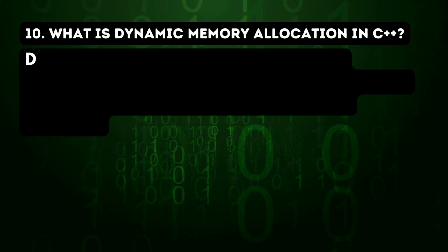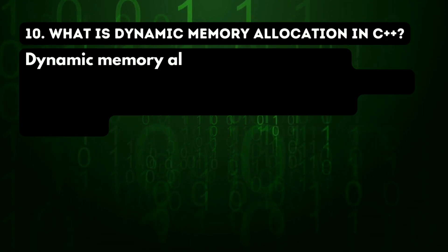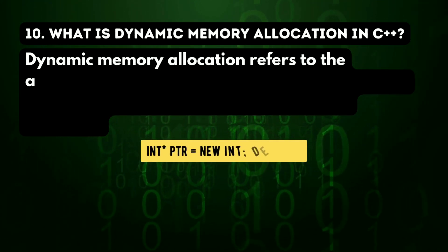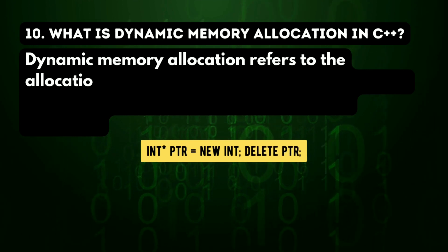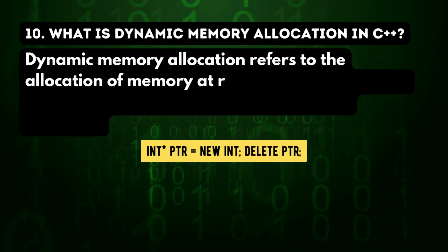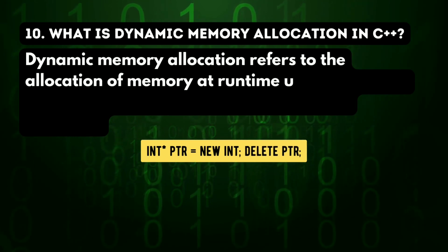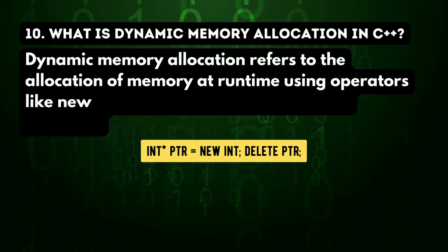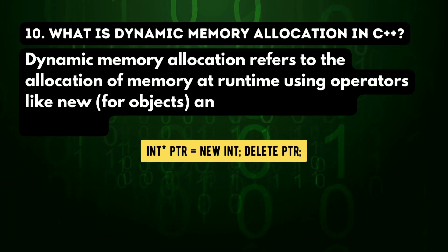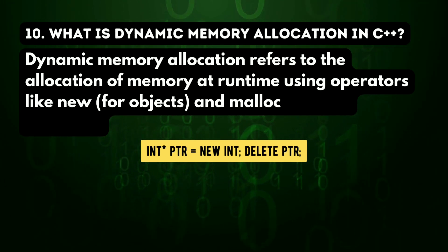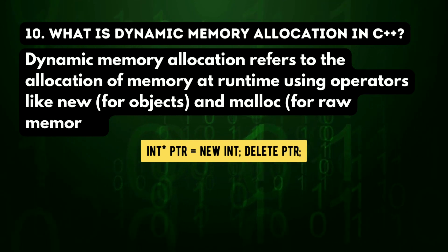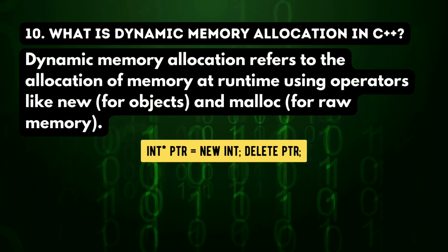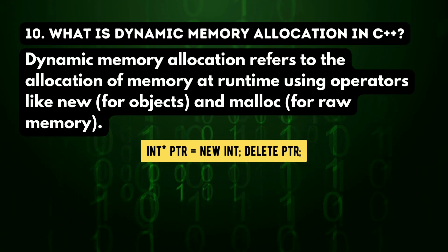Next question: what is dynamic memory allocation in C++? Dynamic memory allocation refers to the allocation of memory at runtime using operators like new for objects and malloc for raw memory.